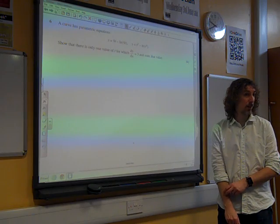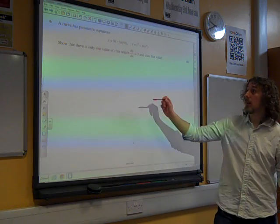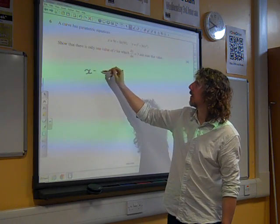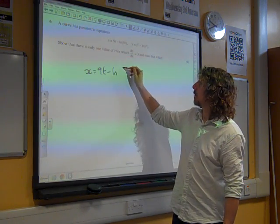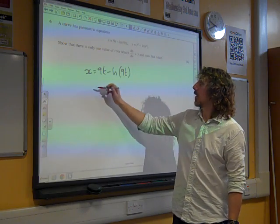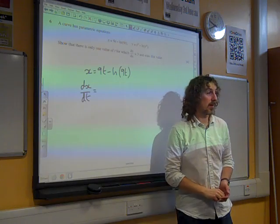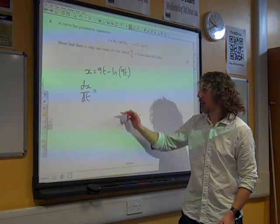We start with some fairly tricky differentiation. We're going to differentiate this. The first bit's straightforward - if you differentiate 9t with respect to t, we know we're going to get 9.